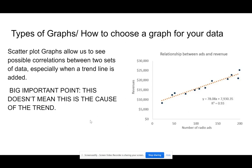Then we have scatter plots. Scatter plots are where we take two different data sets and graph them on the same plane, and then we look to see if we can find any trends in that set of data. When we do, we often add what we call a trend line.